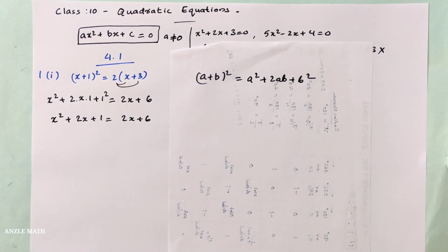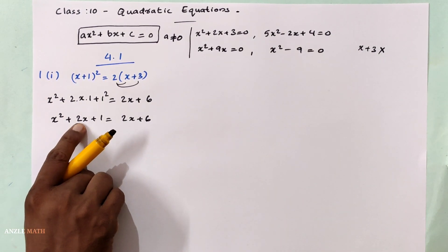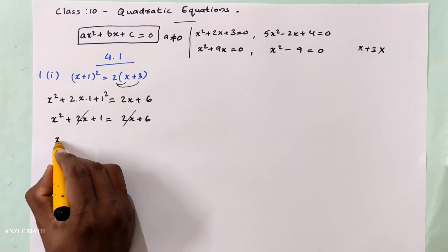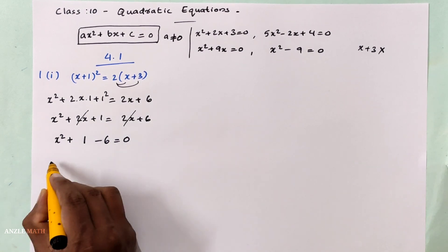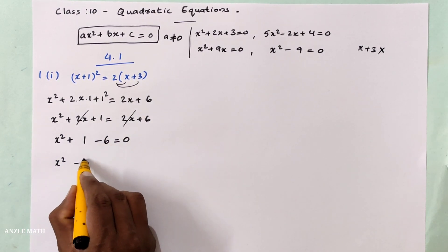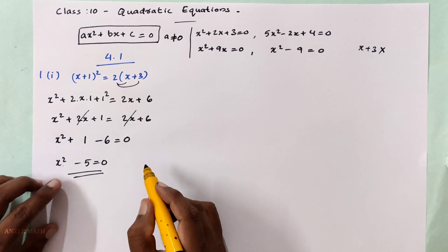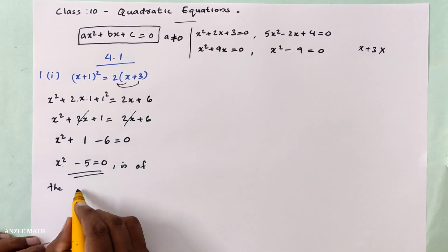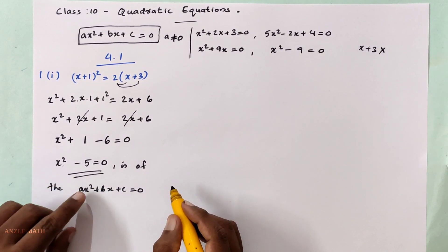Now simplifying: we cancel 2x from both sides. x² plus 1 equals 6, so x² minus 5 equals 0. This is in the form x² plus bx plus c equals 0, and the highest power is x squared.